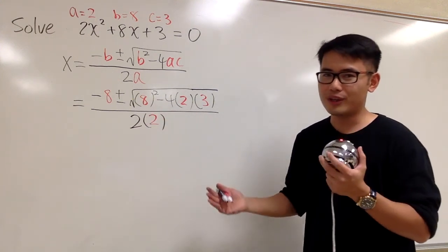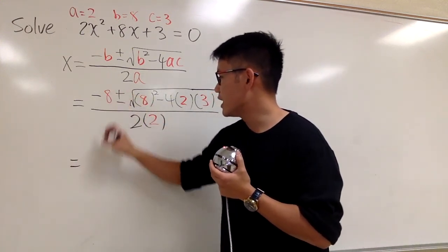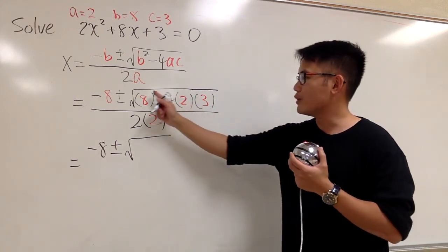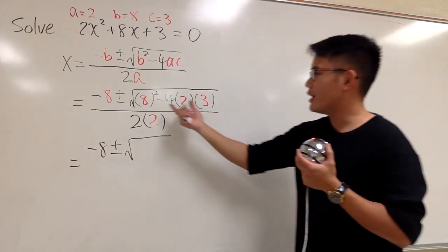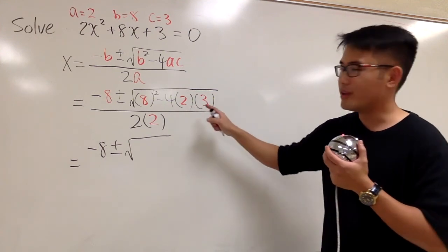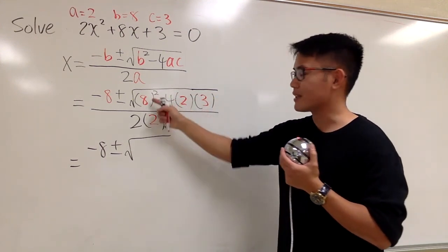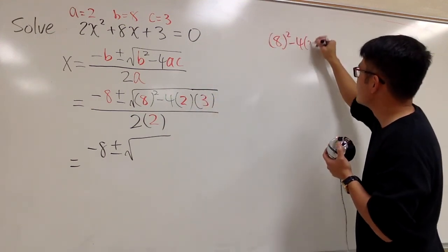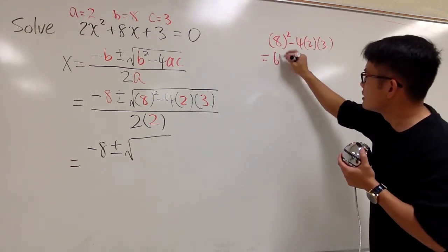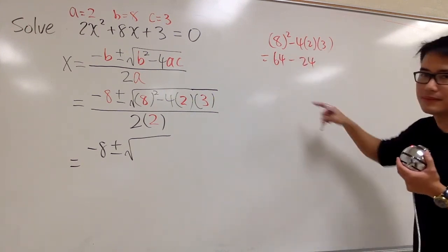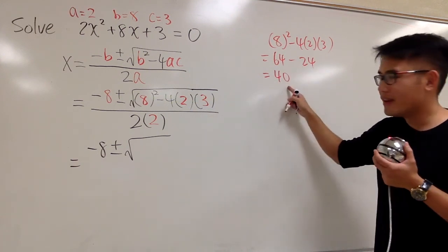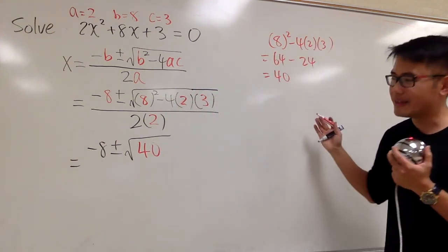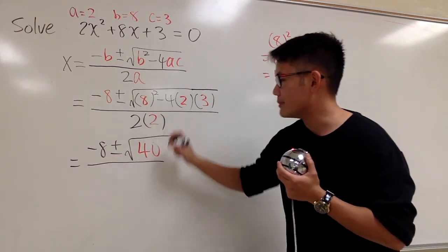So this is the setup, and now we just have to work it out. This is going to be negative 8 plus or minus the square root. We'll work out the inside: 8 squared minus 4 times 2 times 3. 8 squared is 64, and 4 times 2 is 8, times 3 is 24. So 64 minus 24 gives us 40, and this is the number that goes inside the square root. This is all over 2 times 2, which is 4.